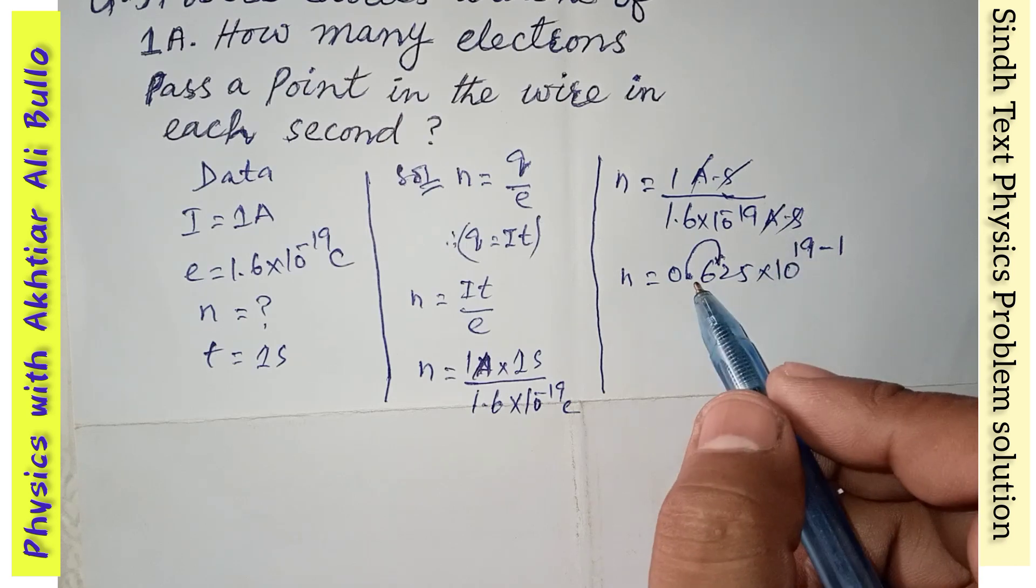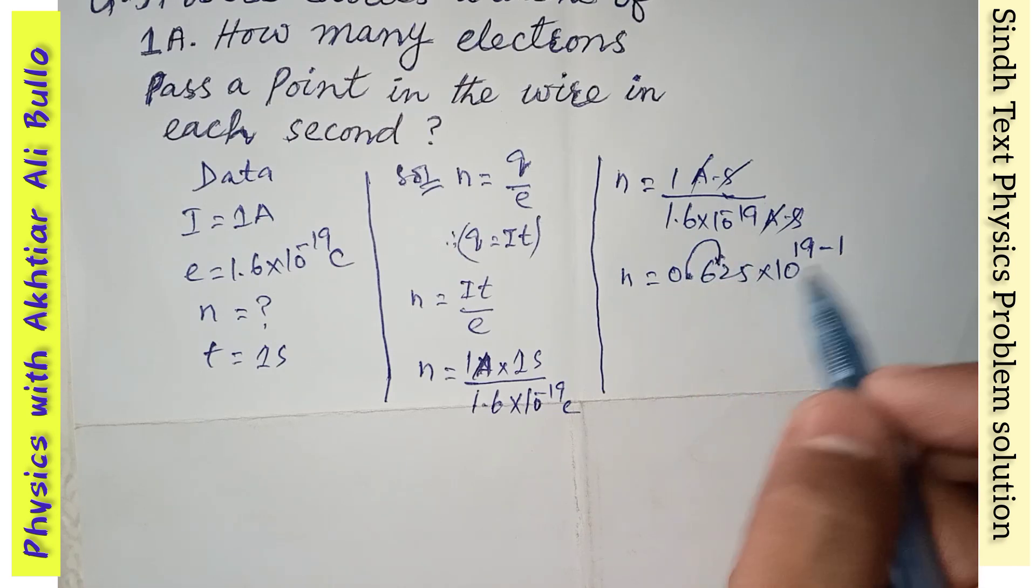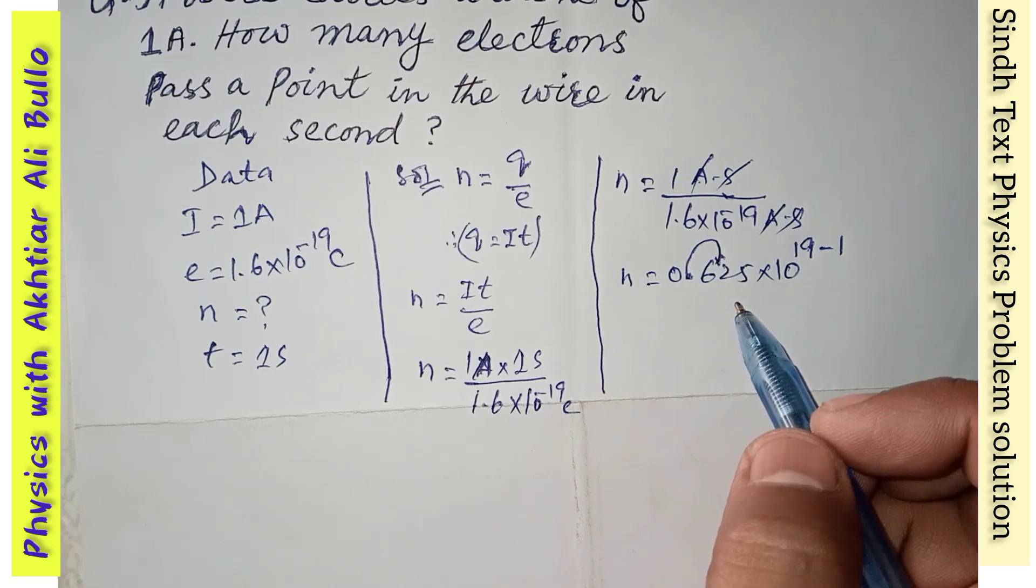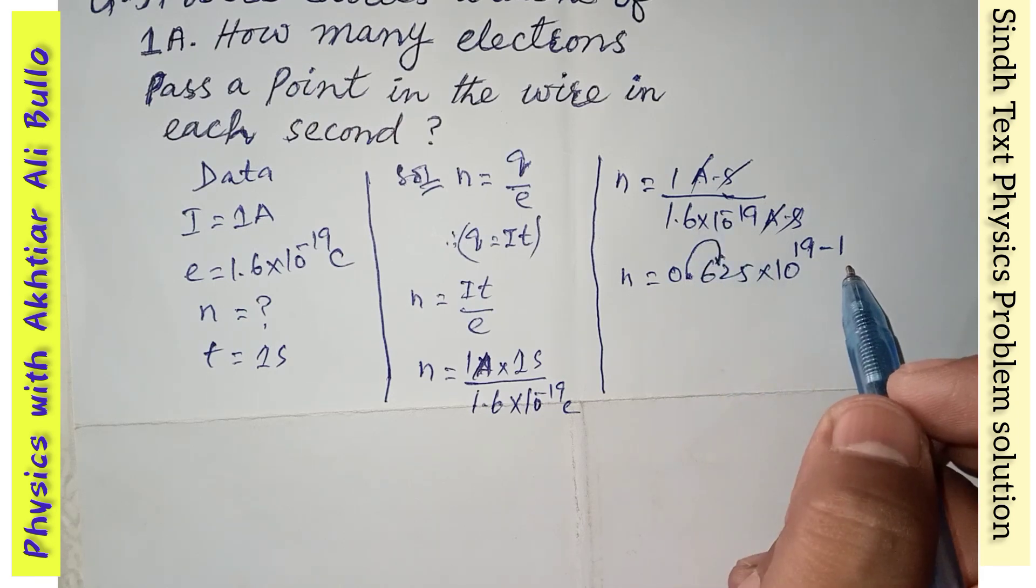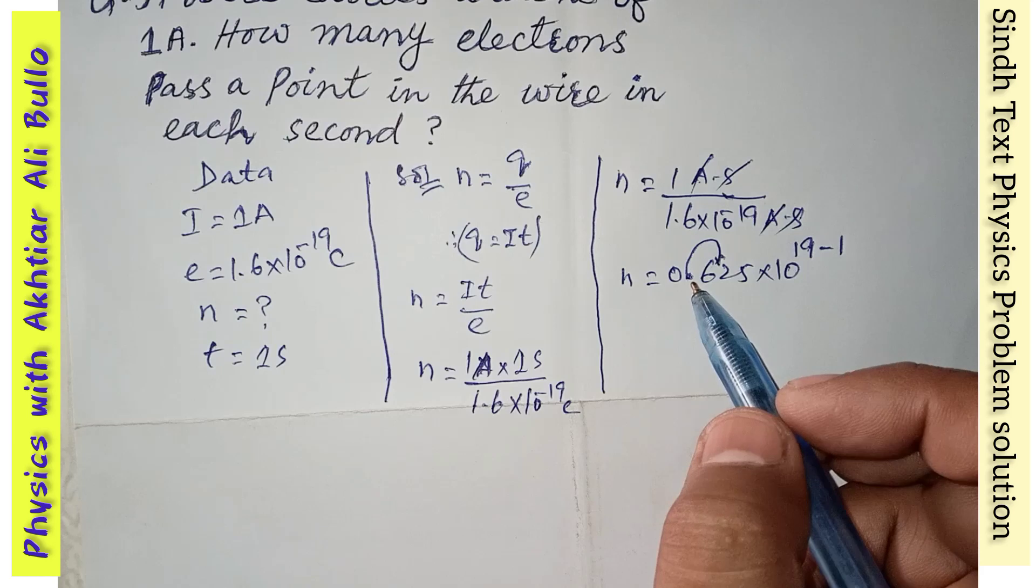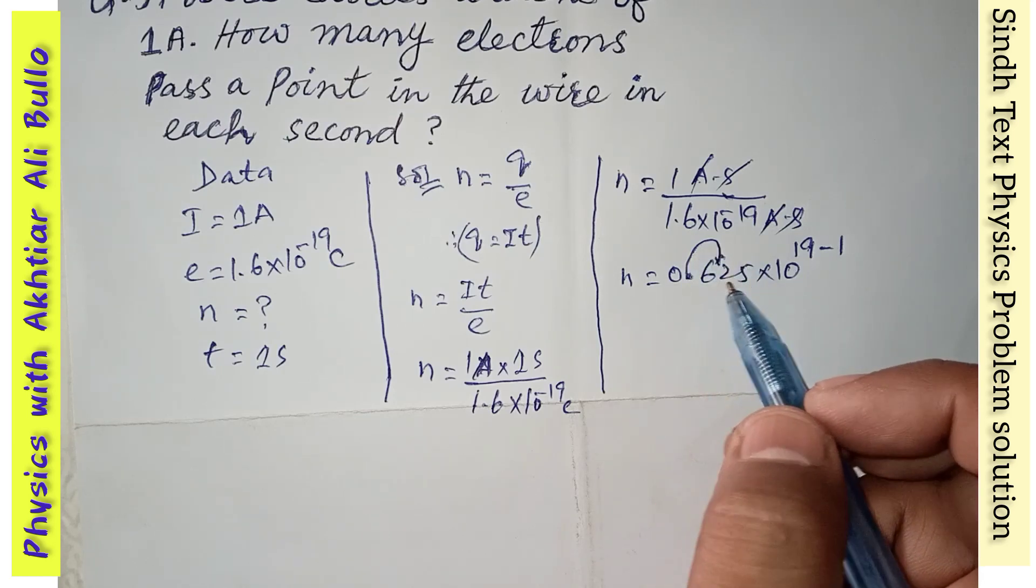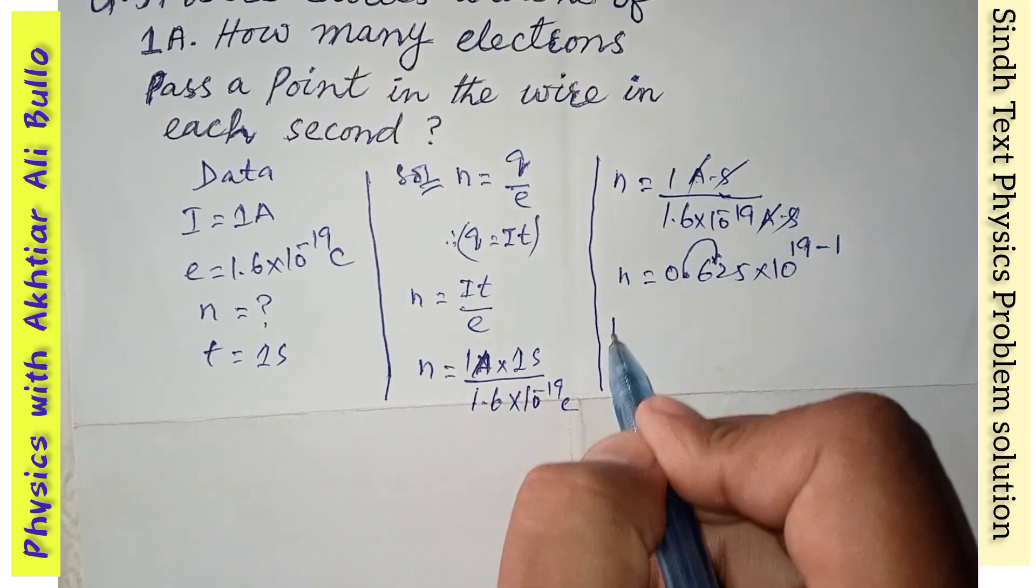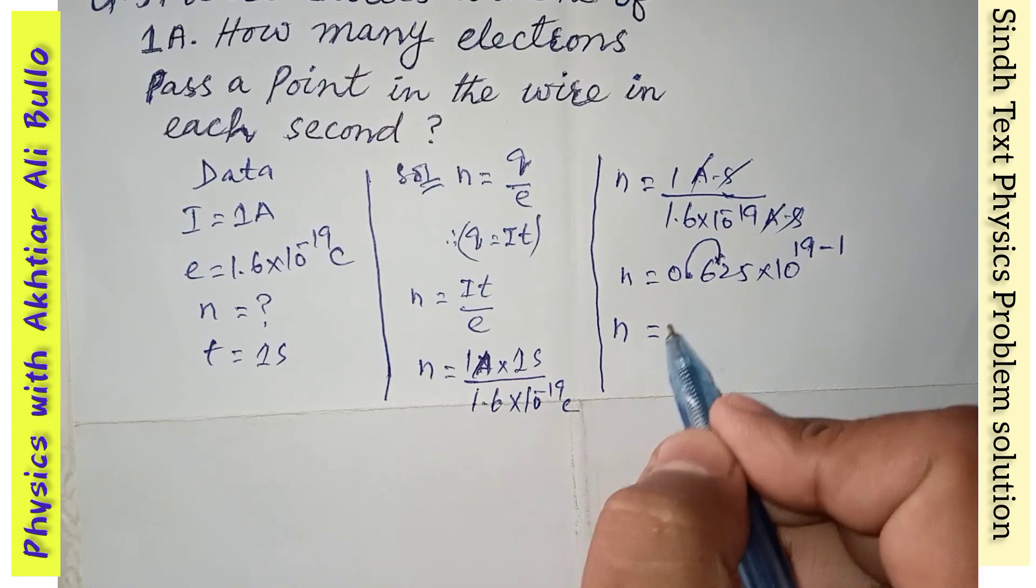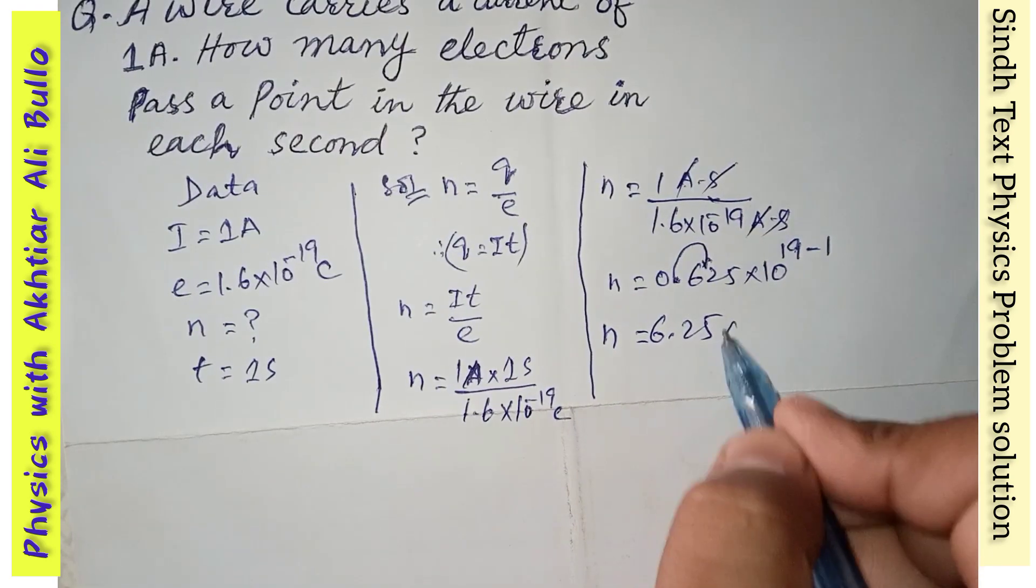because when we will shift decimal from left to right, then we will subtract, and when we will shift the decimal from right to left, then we will add. So here we are shifting decimal from left to right up to one digit, so we will subtract 1 from the power. So n will be equal to 6.25 × 10